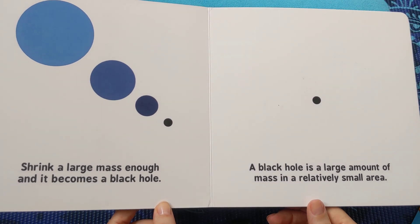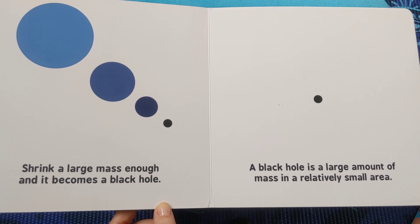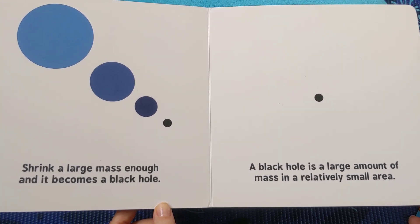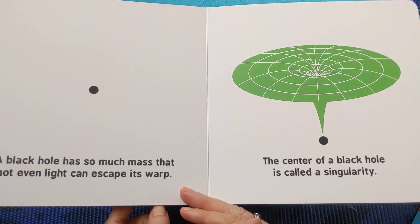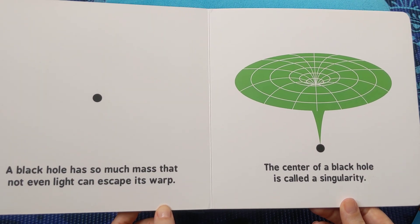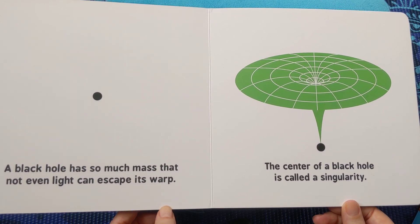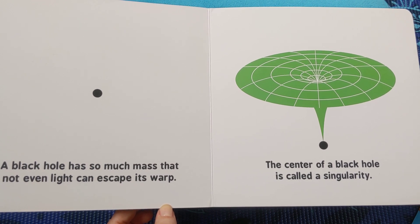Shrink a large mass enough and it becomes a black hole. A black hole is a large amount of mass in a relatively small area. A black hole has so much mass that not even light can escape its warp. The centre of a black hole is called a singularity.